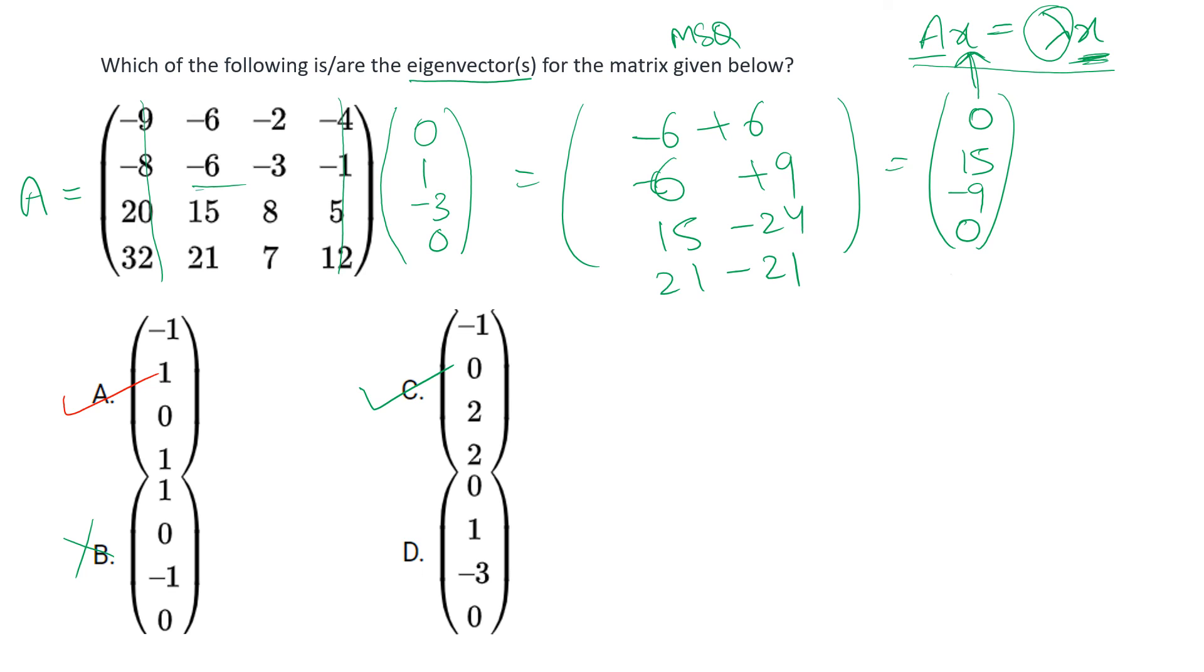Okay this is minus six and plus nine, so the result will be three. So now from this again we can take out three common, it will be zero, one, minus three, zero. Now this is again three times x, so value of lambda is three and this is the same x which we got once again. So again this option D will also be one of its eigenvectors.